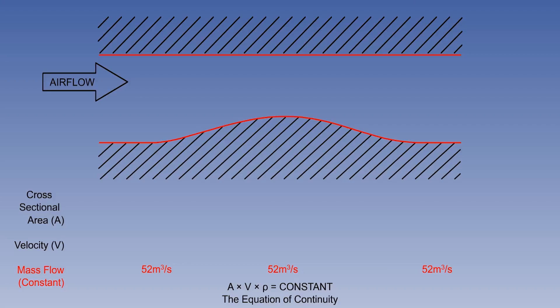The mass flow will remain constant at all points along the tube. The equation of continuity is A times V times rho equals constant.